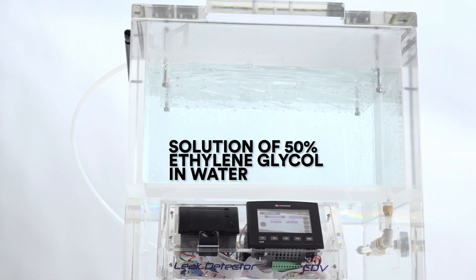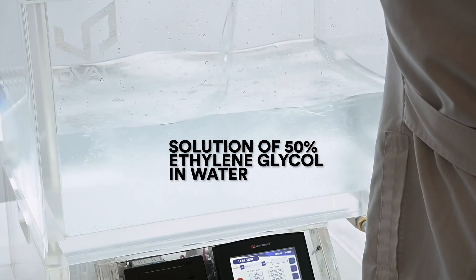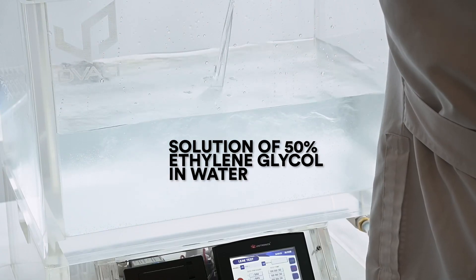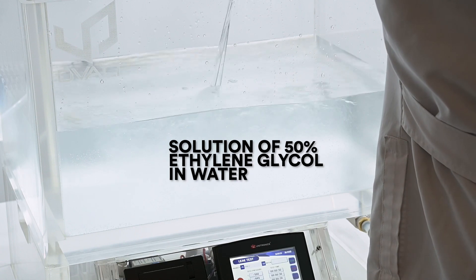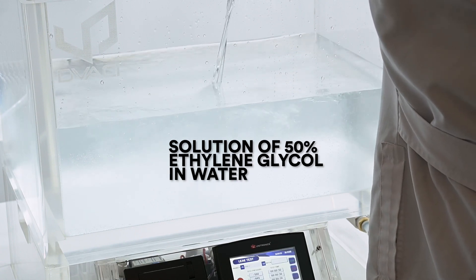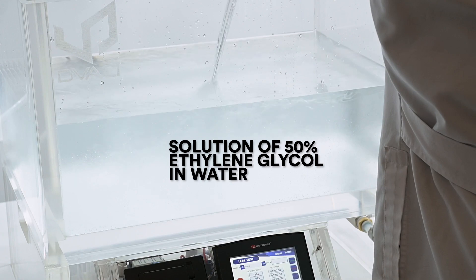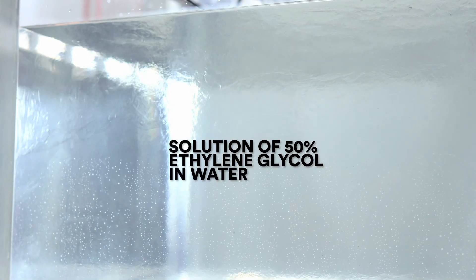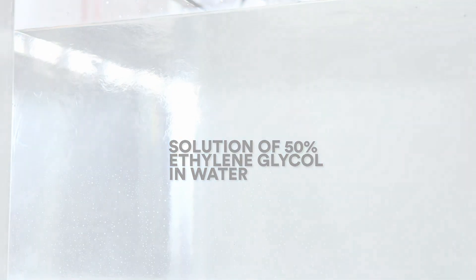This is why the ASTM D4991 recommends using a solution of 50% ethylene glycol in water, because this mixture is less likely to form bubbles at high vacuum levels, improving the accuracy and consistency of the test results compared to using water alone.